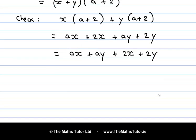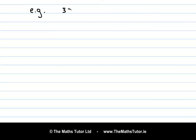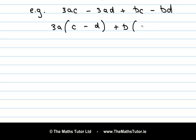Let's look at another example. 3ac minus 3ad plus bc minus bd. So the first two terms of this expression have a common factor of 3a. So this becomes 3a times c minus d. The second two terms have a common factor of plus b. So it's plus b times c minus d.